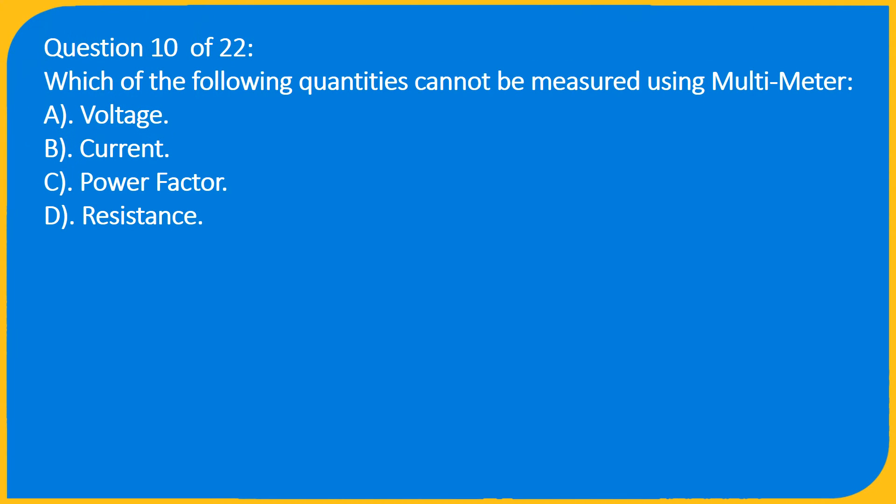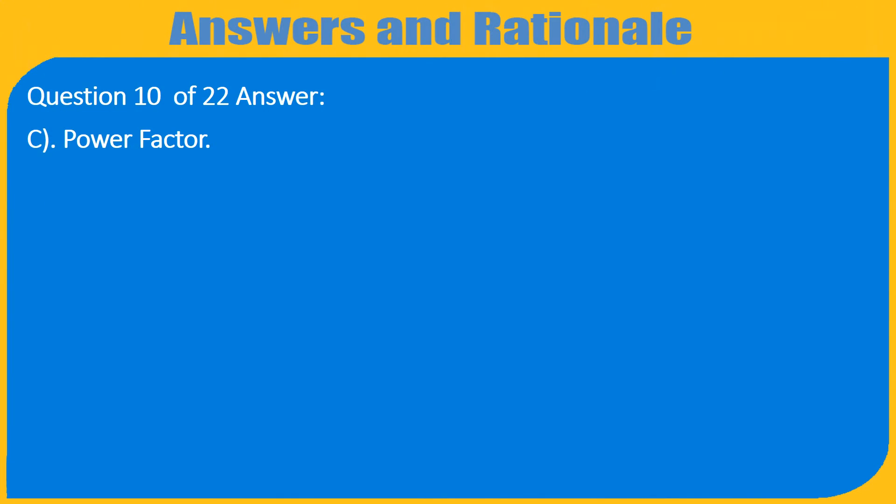Question 10 of 22: Which of the following quantities cannot be measured using a multimeter? A. Voltage, B. Current, C. Power factor, D. Resistance. Answer: C. Power factor.